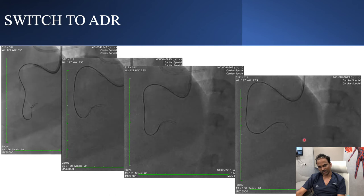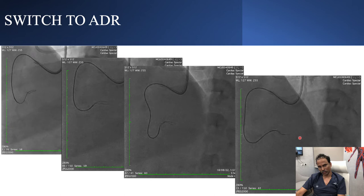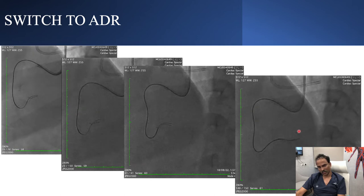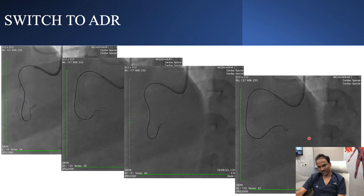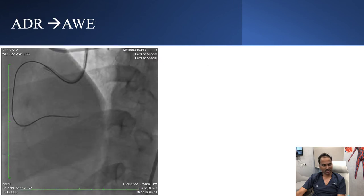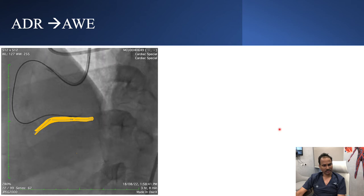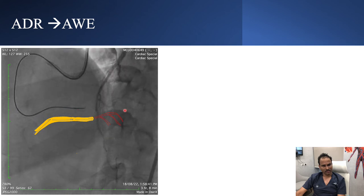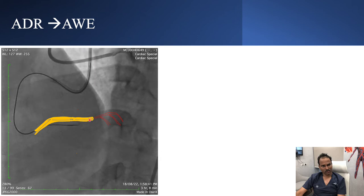You can see this is the course of the vessel, which is like a C-loop. We crossed the entire loop, and once the knuckle courses coaxial with the distal vessel, that's where we stopped the knuckle. You can appreciate we stopped the knuckle here, and from here the vessel is basically very coaxial. Once the course is straight, you can stop the knuckle.